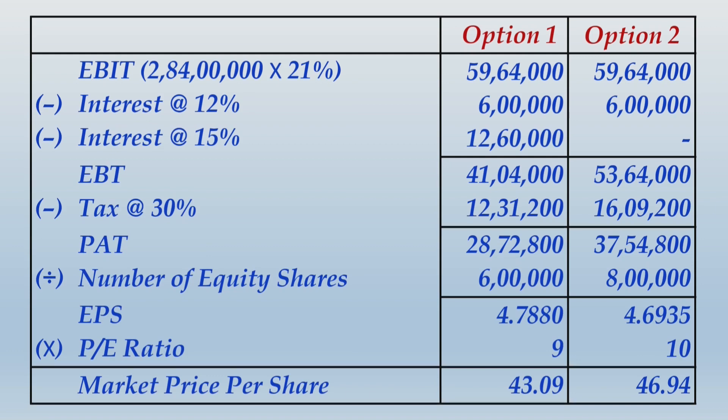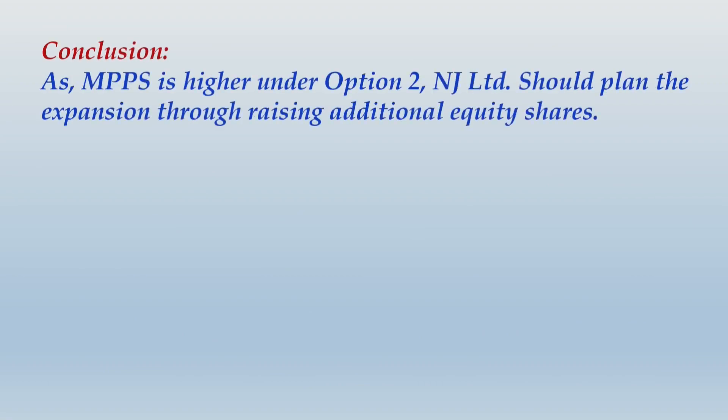Conclusion: As the market price per share is higher under Option 2, NJ Limited should plan its expansion by raising additional equity shares. Option 2 is preferred. That is the end of the solution.